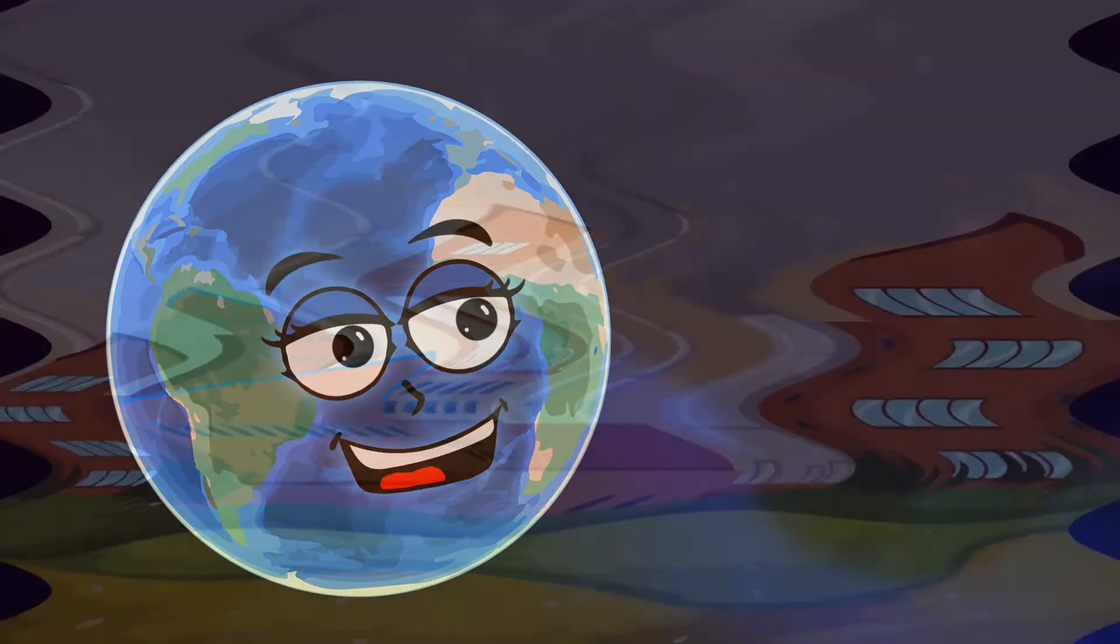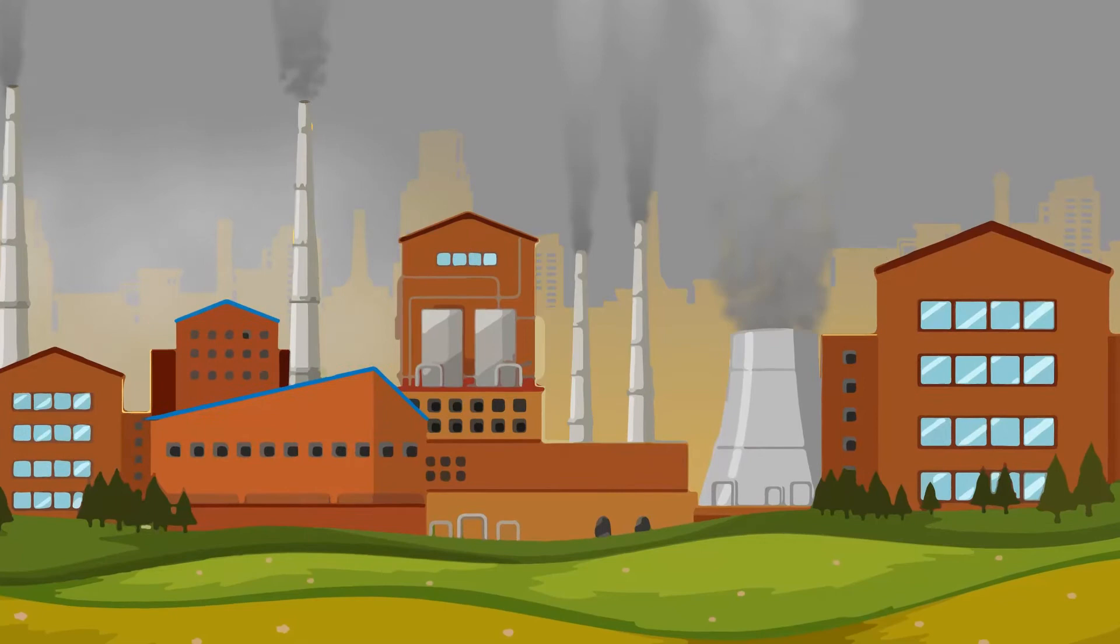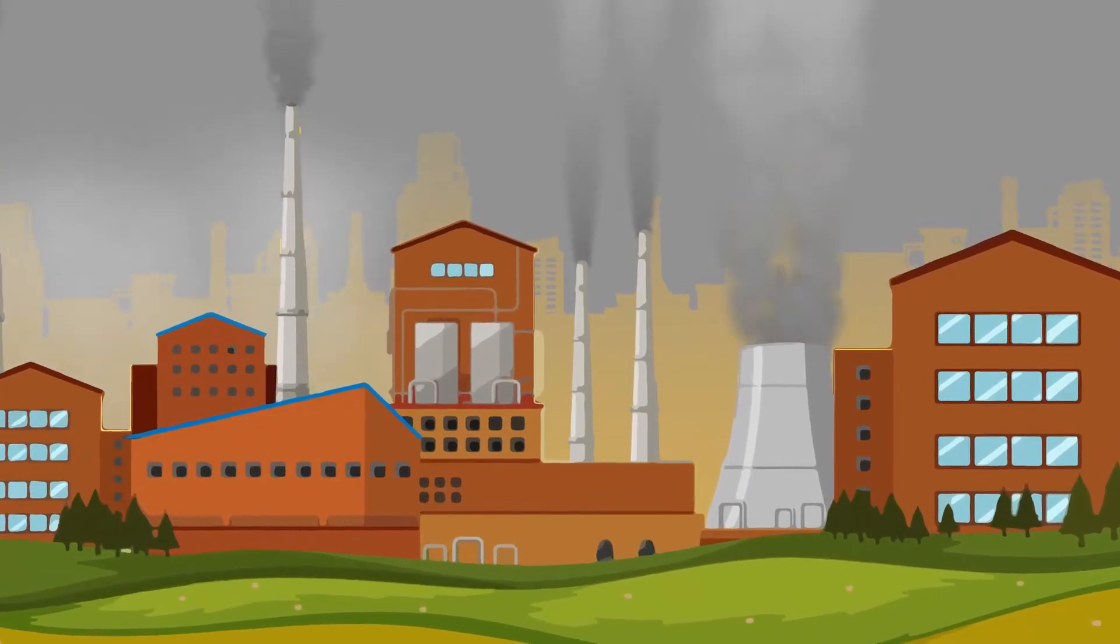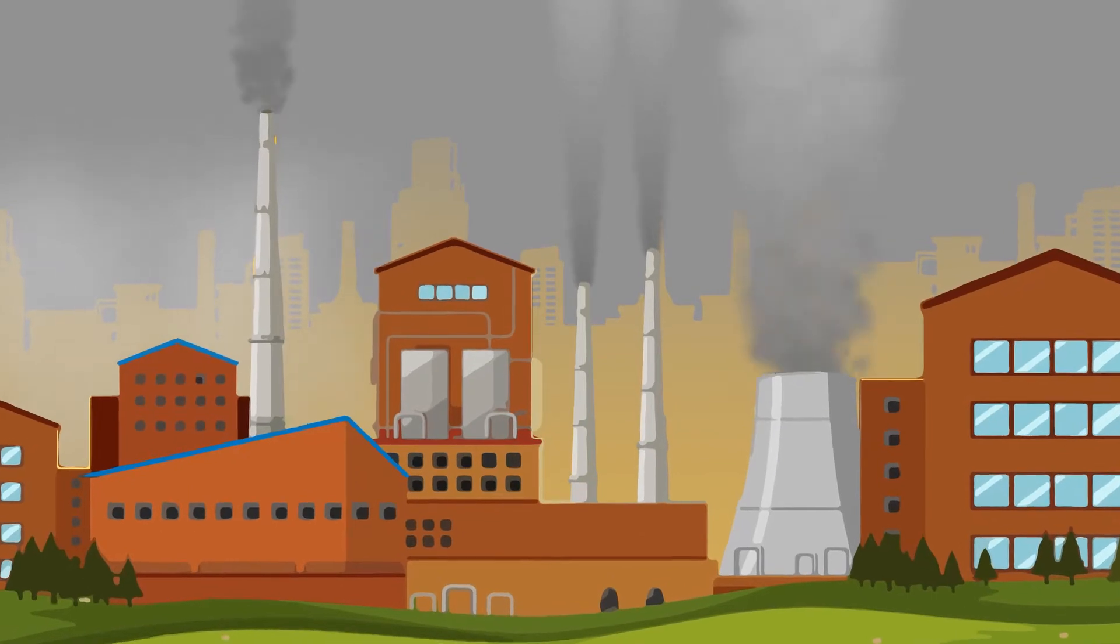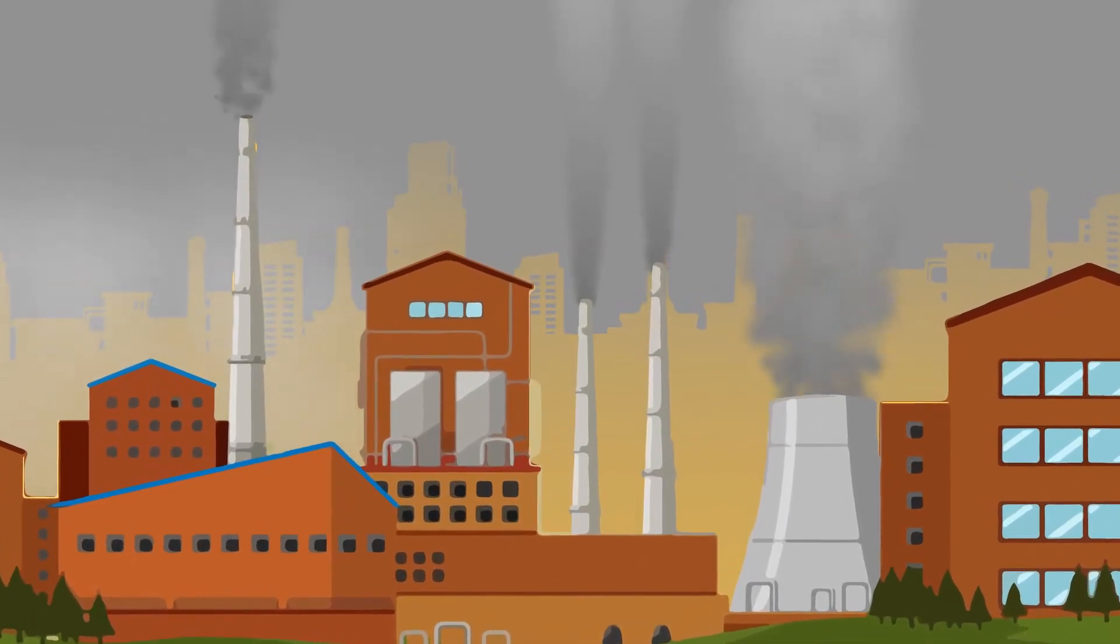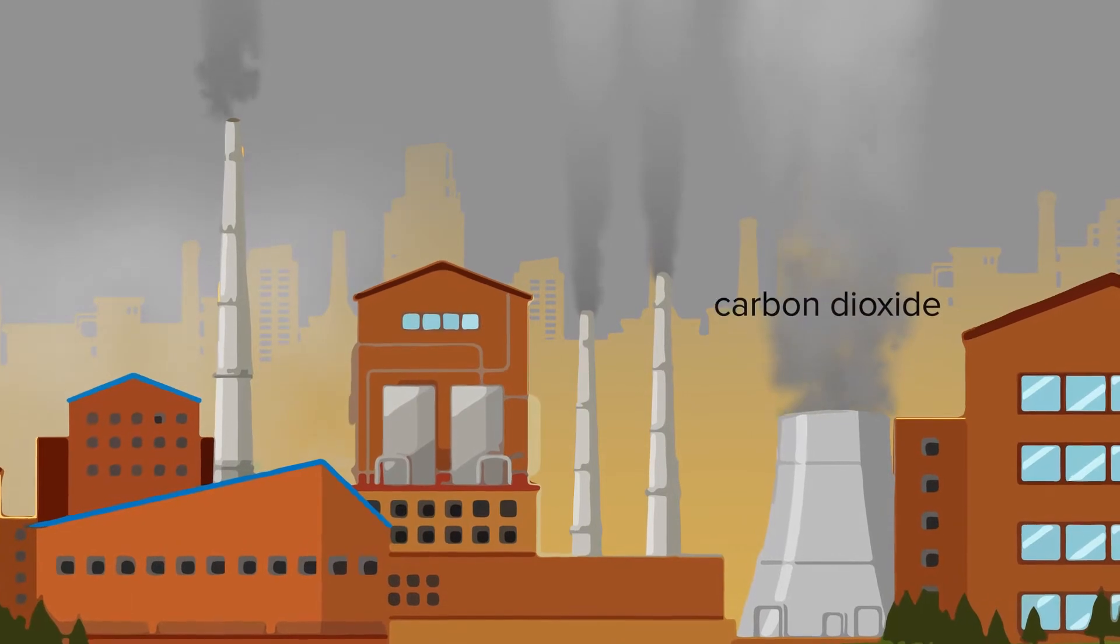It all started during the Industrial Revolution in the 1800s. That's when people first invented the technology for factories. These factories were fueled by coal, which released too much of this gas called carbon dioxide into the air.